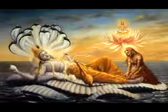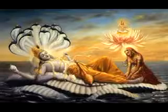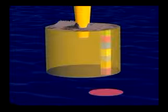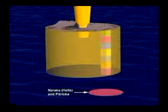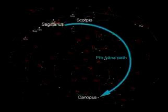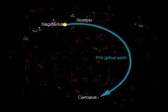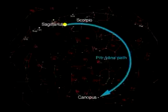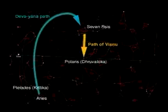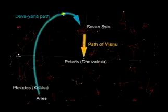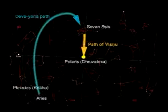Beneath Bhumandala and its lower strata, there is the Garbhodak ocean with Ananta Shesha and Garbhodakashayi Vishnu. These divine incarnations are said to be inaccessible to persons who lack the qualifications to see them. The Garbhodak or Amniotic ocean fills the lower half of the sphere of the Brahmanda. If we interpret Bhumandala as the ecliptic plain, then this ocean must lie in all directions in the sky to the south of the ecliptic. Between the Garbhodak ocean and Bhumandala are located the hellish worlds and Pitriloka, the realm of the ancestral spirits. The Vishnu Purana describes a path through the sky to Pitriloka, starting just below the ecliptic near the constellations Scorpio and Sagittarius, extending southward to the star Canopus, known as Agastya in Sanskrit.